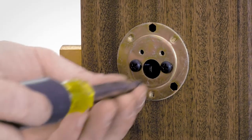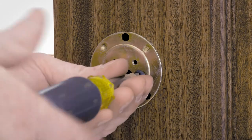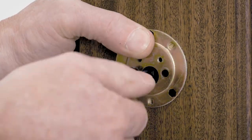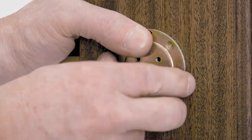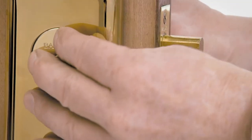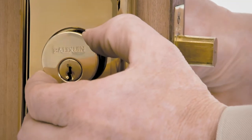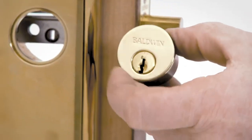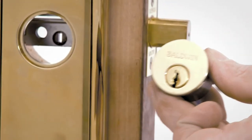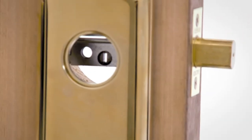For a single cylinder, unscrew the 10-32 by 1-7/8 inch pan head screws. Remove the outside cylinder and inside turnpiece mounting plate. For a double cylinder, remove both inside and outside cylinders as well as the cylinder base.